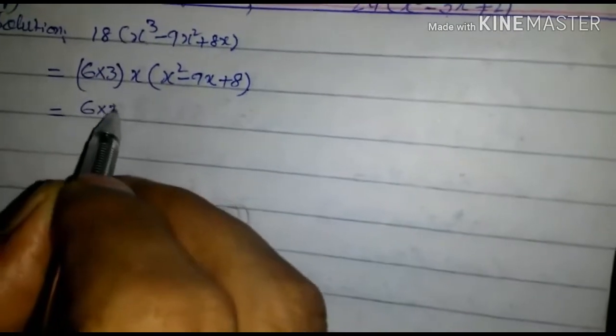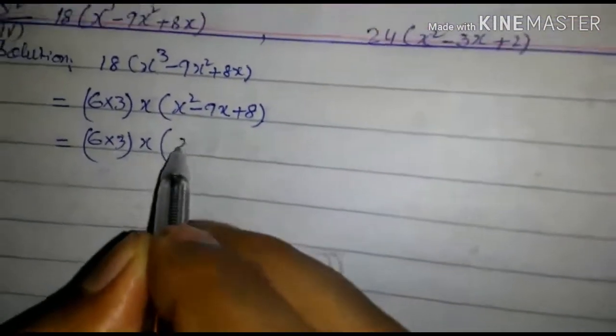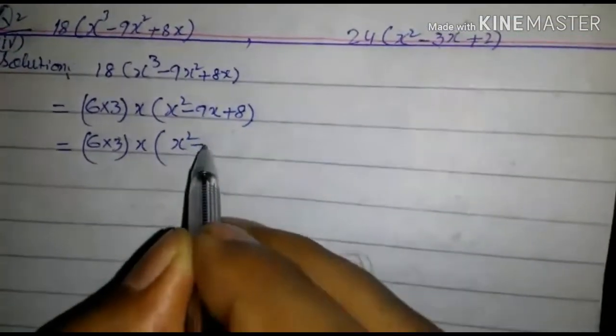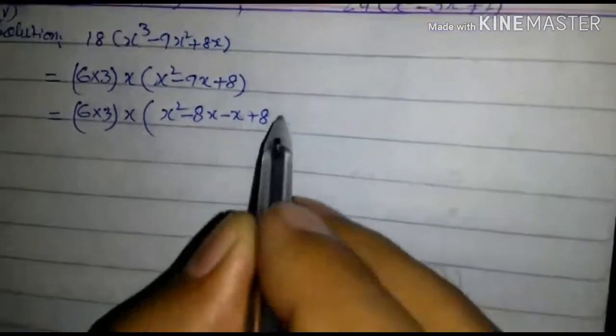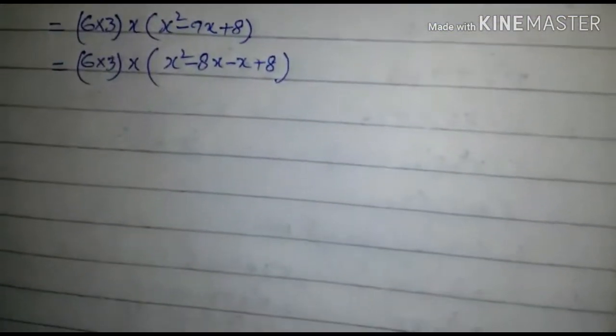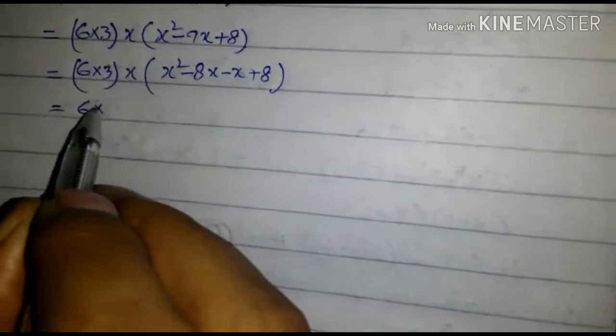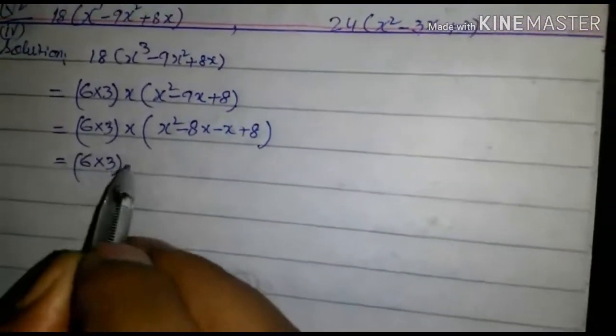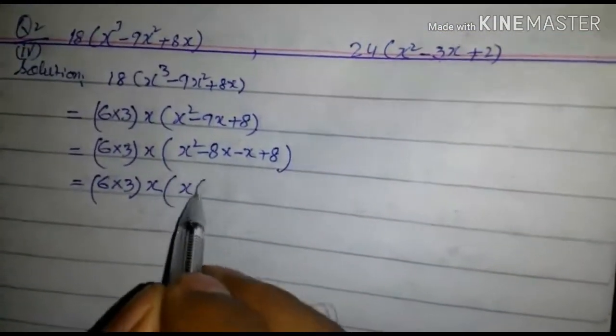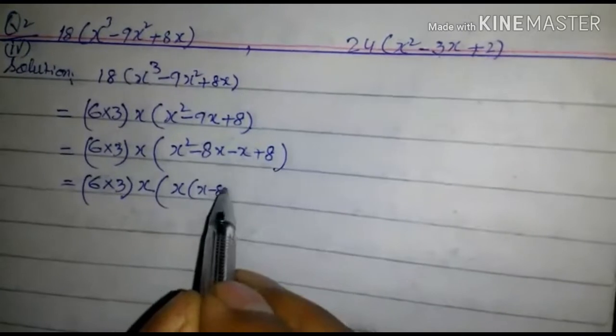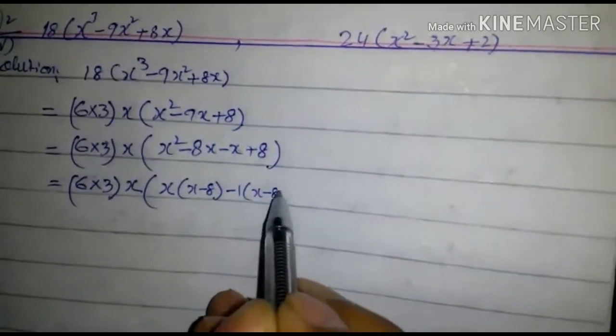That's 6 into 3 into x times (x² - 8x - x + 8) equals 6 into 3. Taking x common: x(x - 8) minus 1 common: (x - 8).